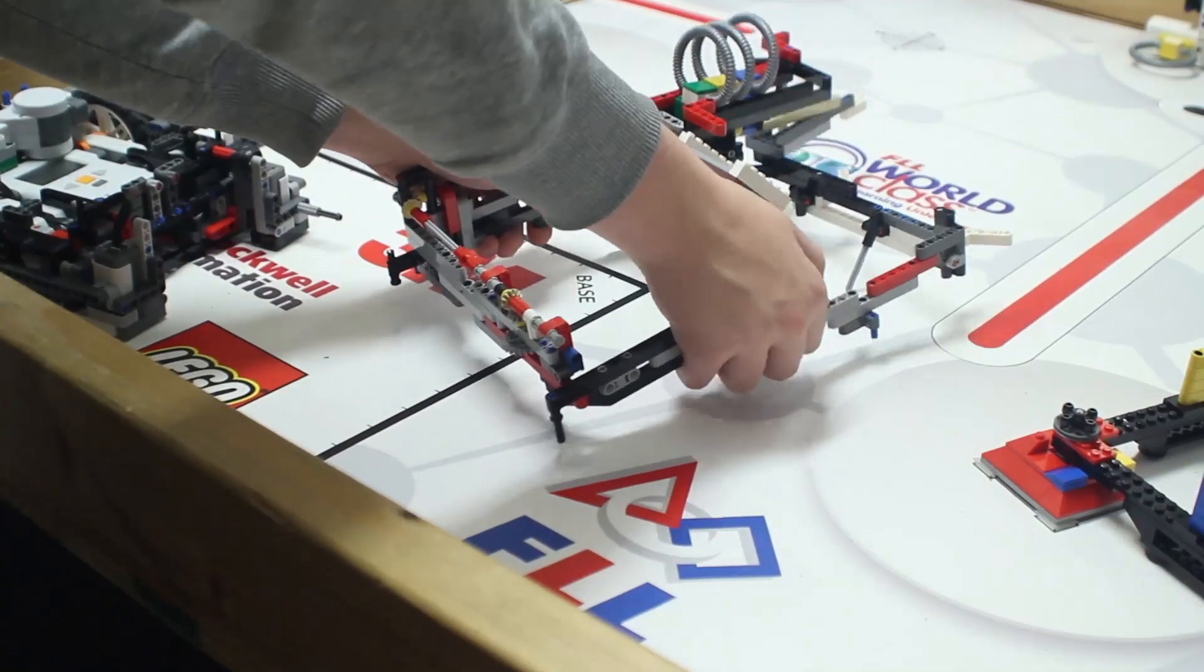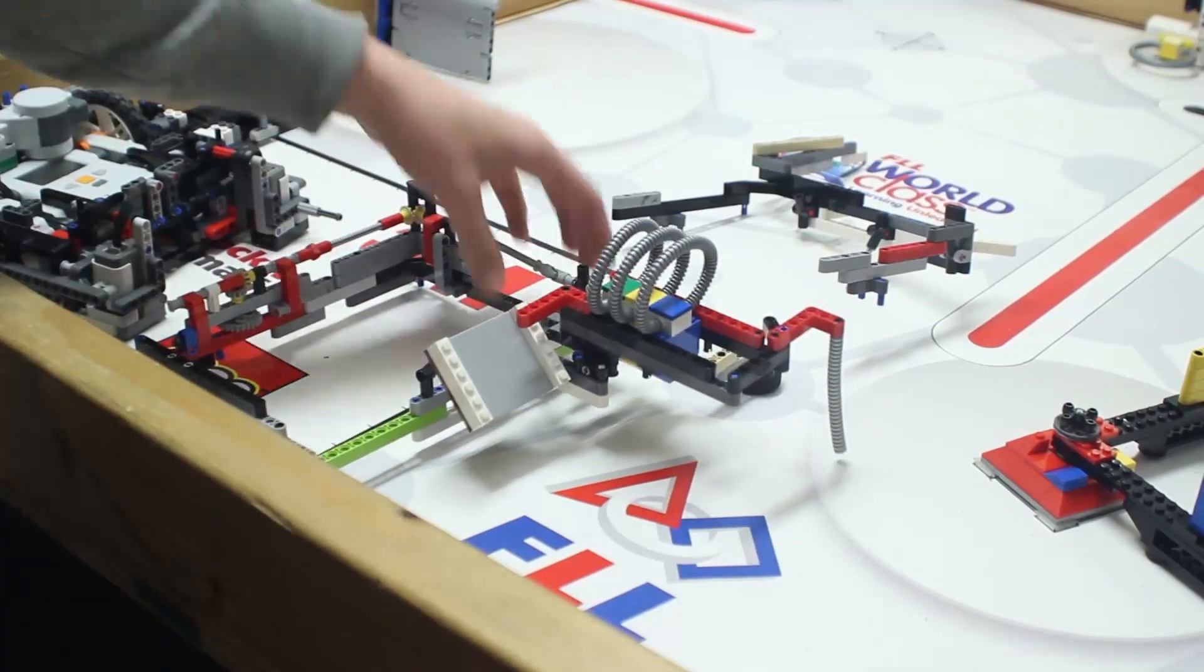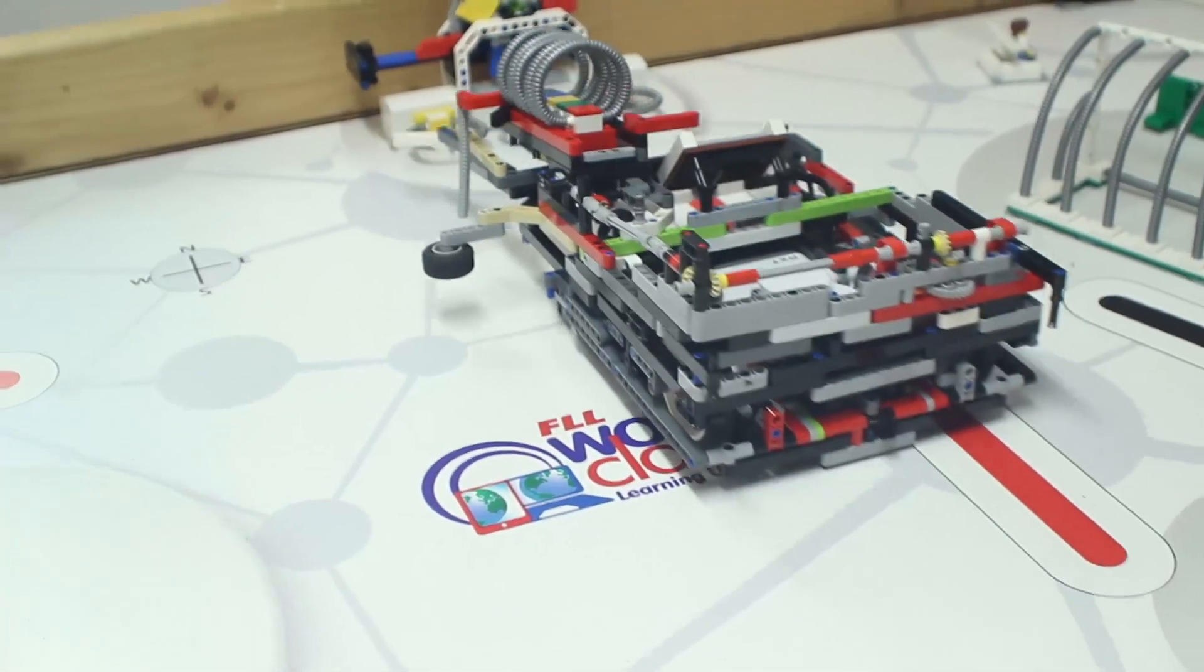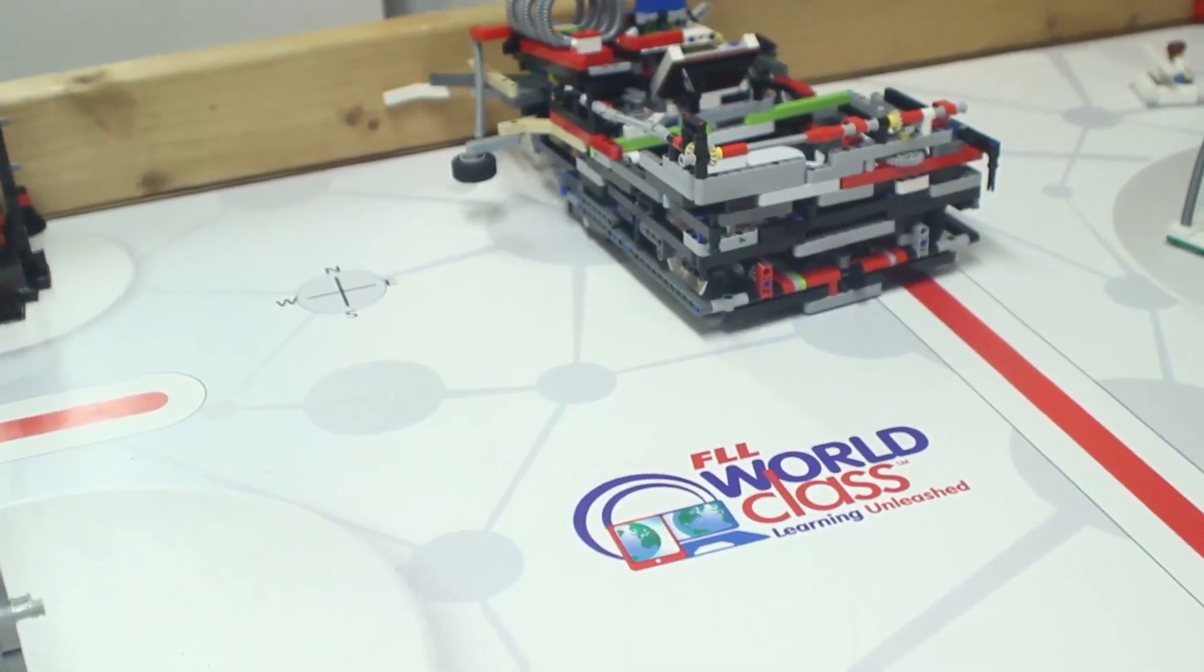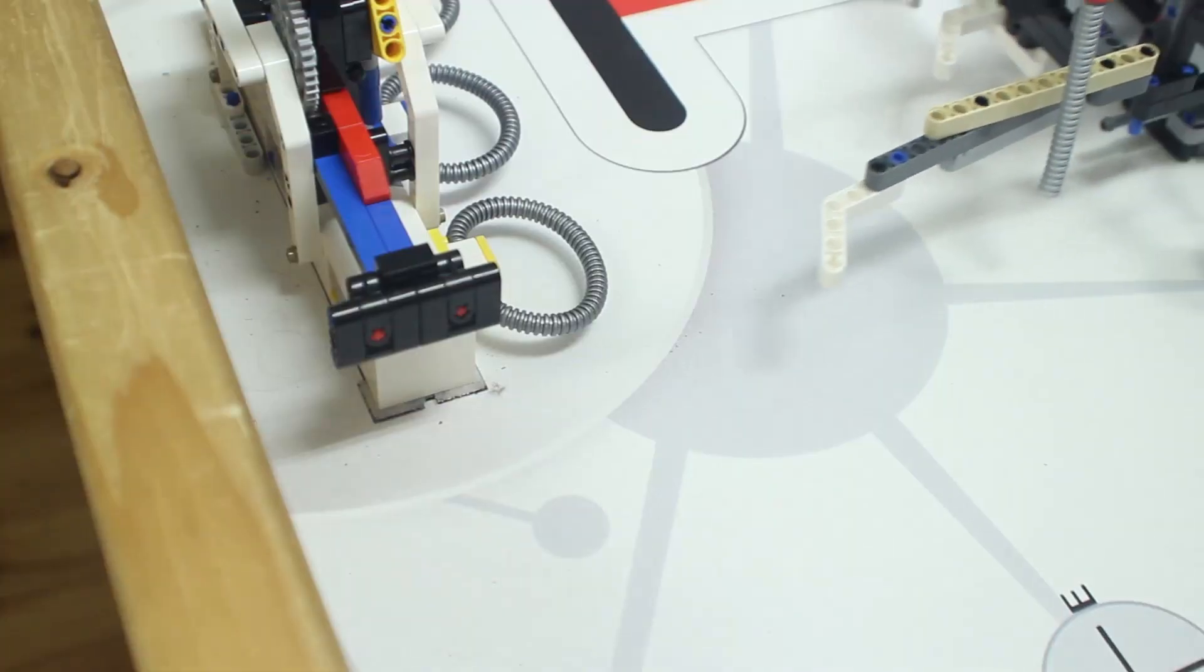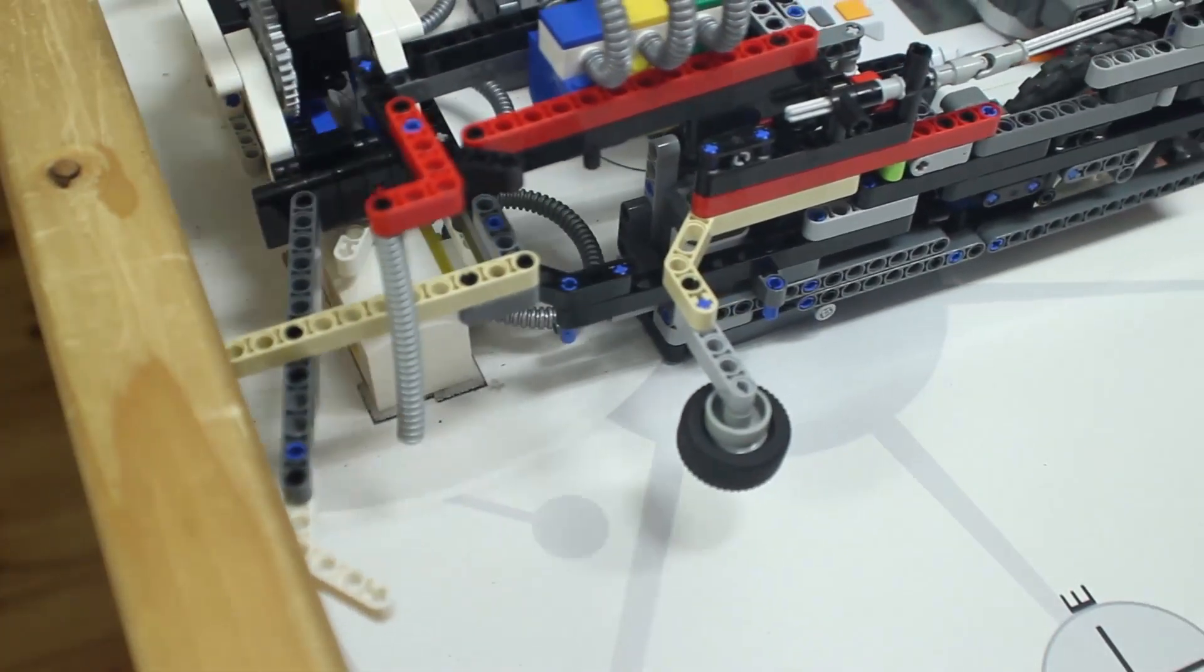The third run's attachment has two parts that separate. The first part is solely for the search engine mission. It drives out and a mechanism on the left pushes in the lever like so.